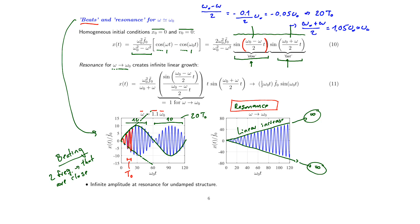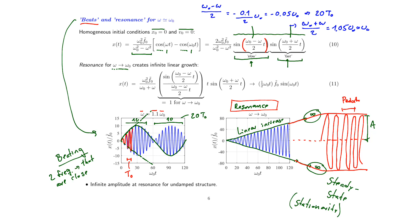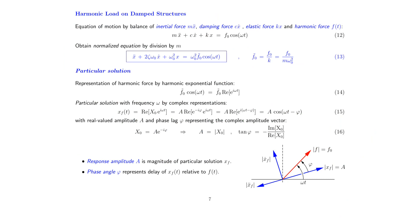This linear increase towards infinity is of course unphysical. In reality we will have an increase, but at some point we will branch off and get a constant amplitude. We extend the domain, and at some point we will have oscillations with a constant period and a constant amplitude. This regime is referred to as steady state, or in some cases stationarity. This limit to the amplitude increase is of course due to what we haven't considered yet — namely damping in the structure.